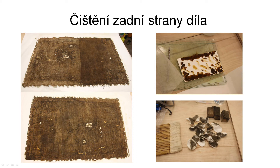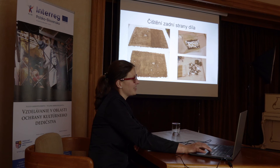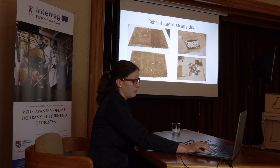To, co vidíte na fotografii vpravo nahoře, je postupné tenčení lepidla, kterého tam na zadní straně bylo požehnaně. Dělalo se to speciálními gely – nanese se speciální gel, který působí jenom na povrchu toho plátna, nejde do hloubky, nabobtná historická lepidla a pak je možné je po nějakém čase mechanicky seškrábnout. Nahoře je poloviční čištění, dole je po vyčištění toho plátna.